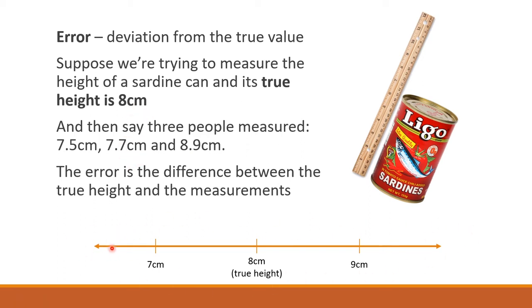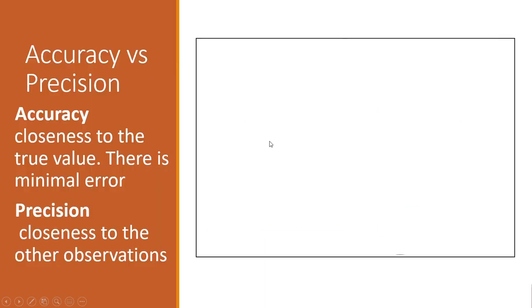There's this number line right here with 7 cm, 8 cm as the true height, and 9 cm. Suppose person one got 7.5, person two got 7.7, and person three got 8.9. This space here, that's the error - that little bit of deviation. I hope that's clear; just rewind the video if it's not clear.